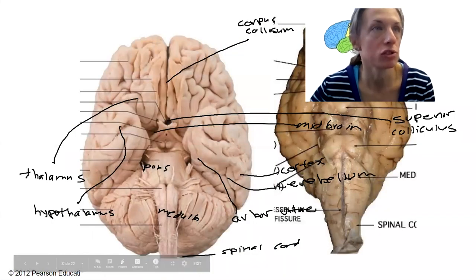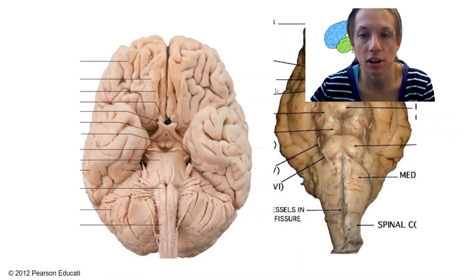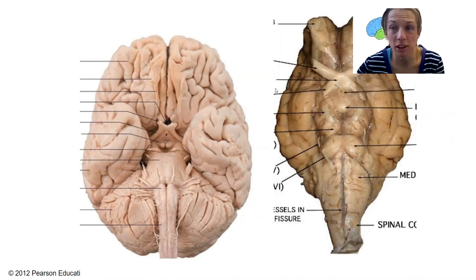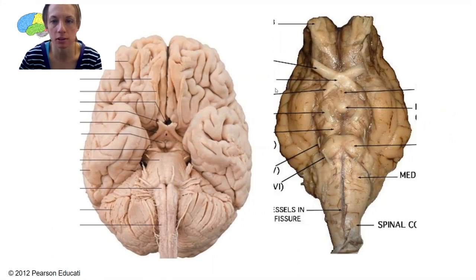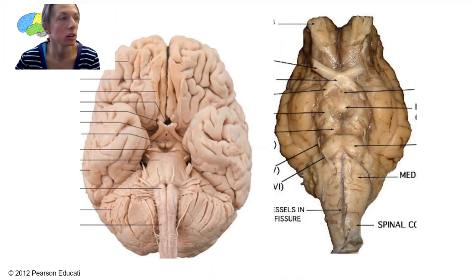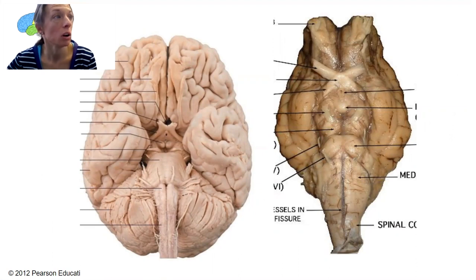Here is the ventral view. So on the ventral side, what do I need to know here? I think I can do everything in the sheep brain, which is what I would have you do in the practical, because I can poke them with sharp things. Ventral side — what cranial nerves do you need to know?